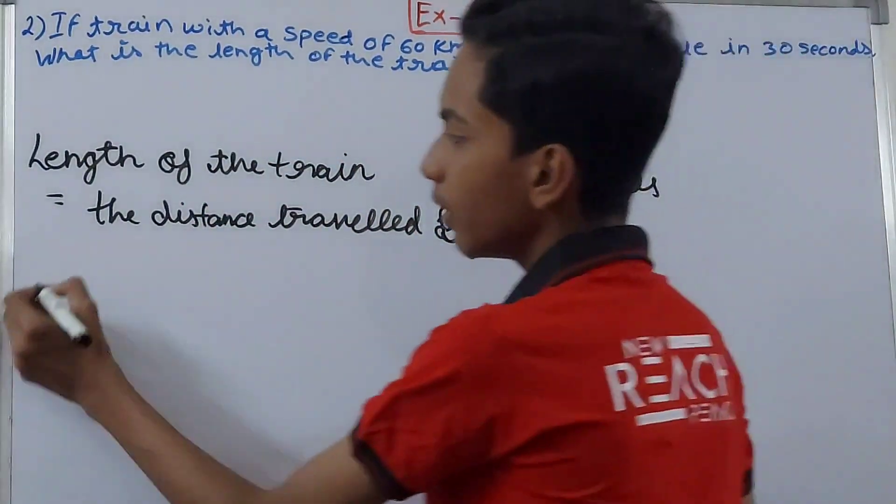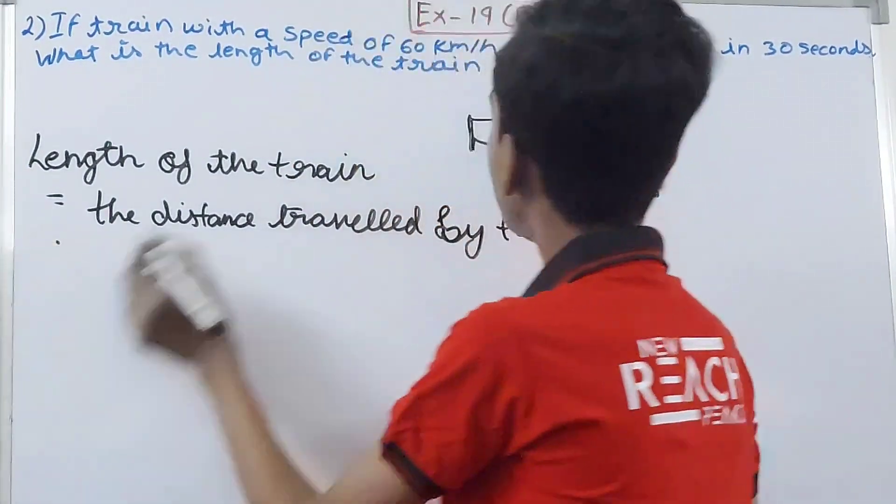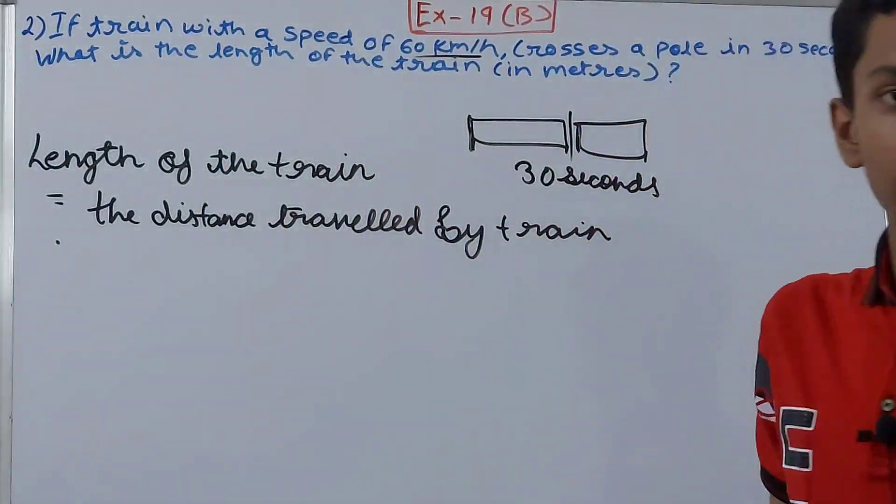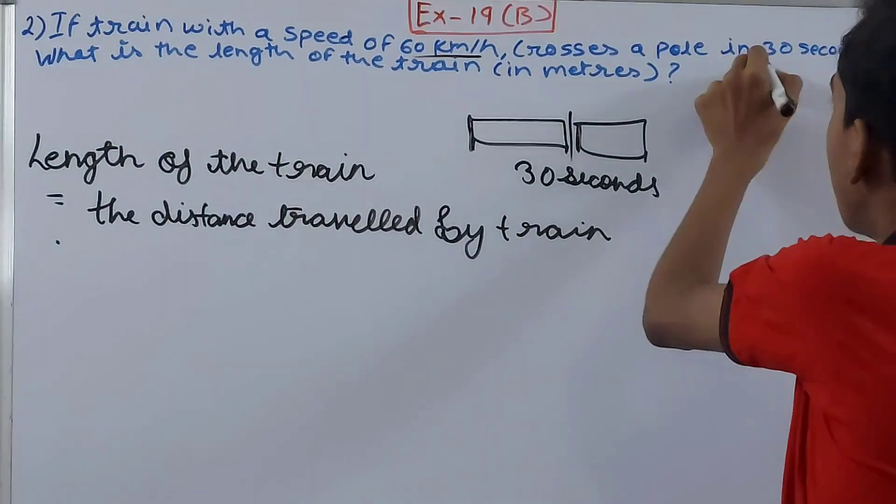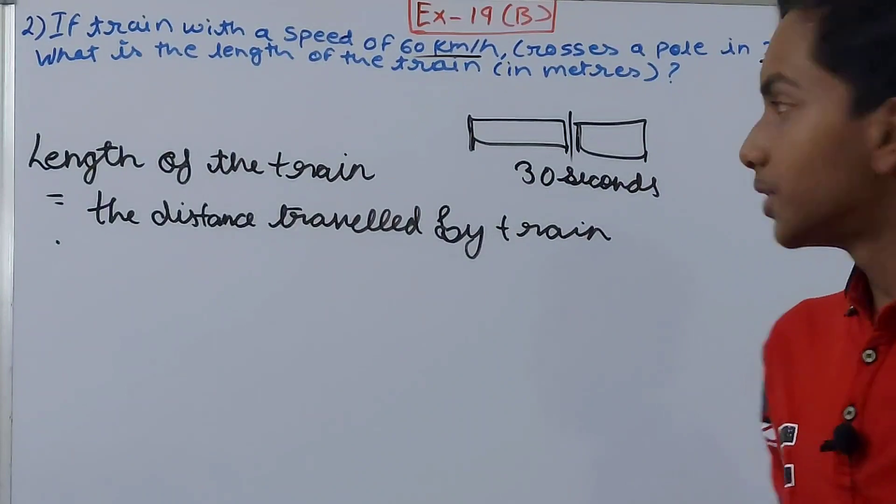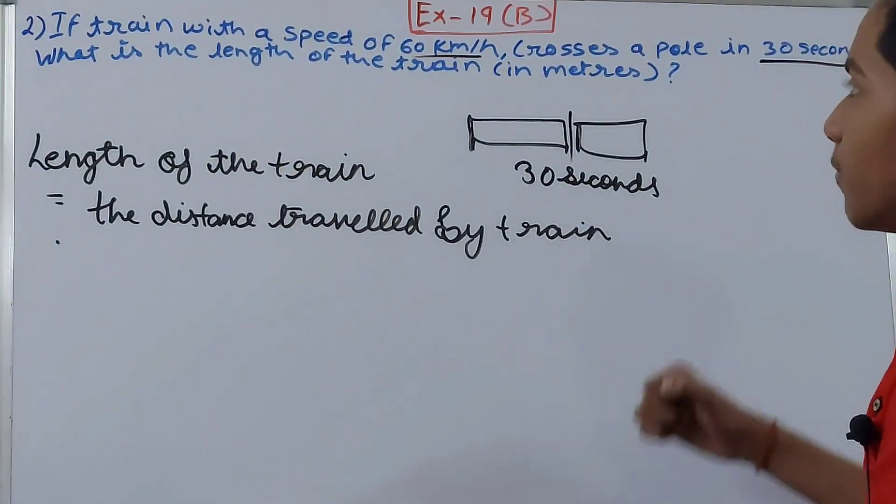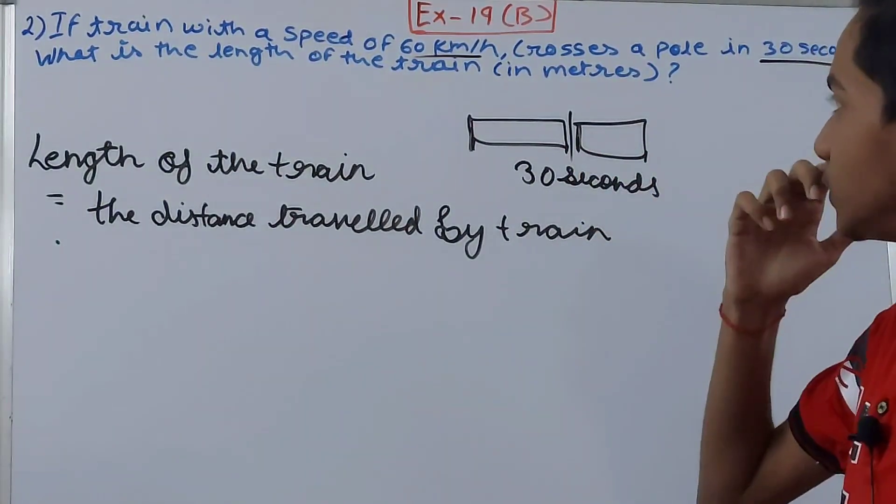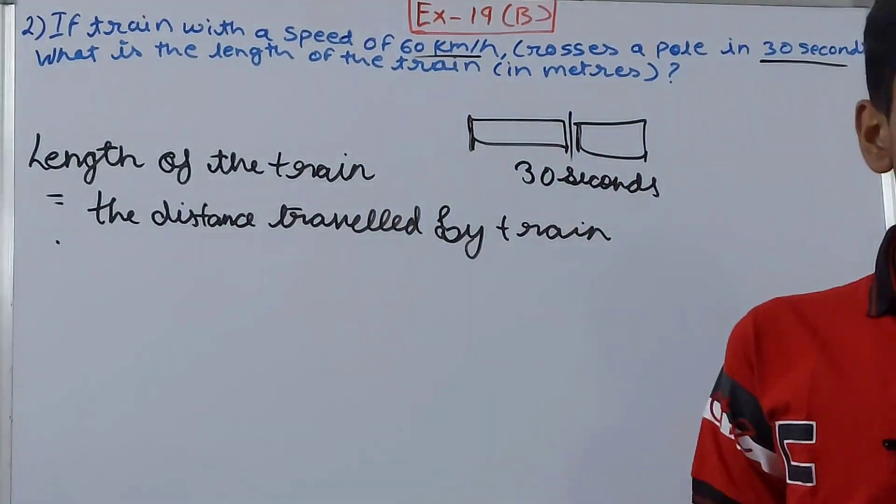So first of all, what do we have? We have speed in kilometers per hour - 60 kilometers per hour. We have time in seconds - 30 seconds. So analyze it and you'll see that the units are not the same, so we'll make the units the same. Let's convert kilometers per hour into meters per second.